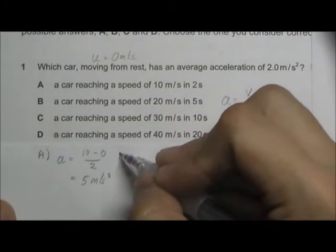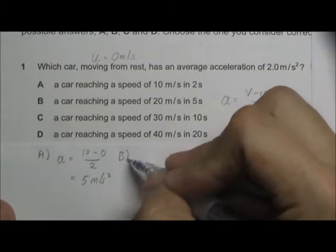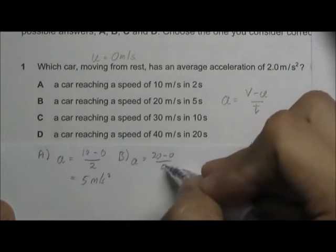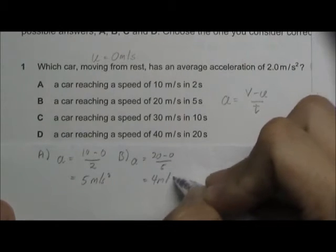For option B, the acceleration will be equal to 20 minus zero divided by 5, which is 4 meters per second squared.